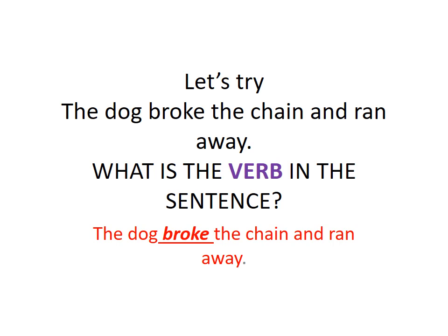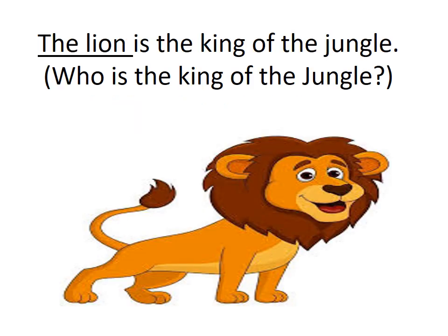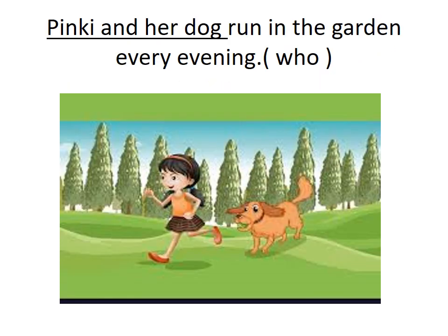Let's try some more. 'The dog broke the chain and ran away.' The verb is 'broke.' Ask yourself: who broke the chain? The dog. So the dog is the subject. More examples: 'The lion is the king of the jungle' — who is the king? The lion. 'Pinky and her dog run in the garden every evening' — who runs? Pinky and her dog. So 'Pinky and her dog' is the subject.